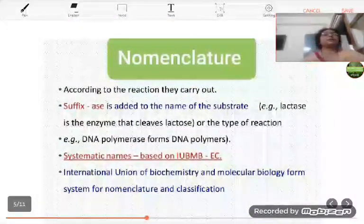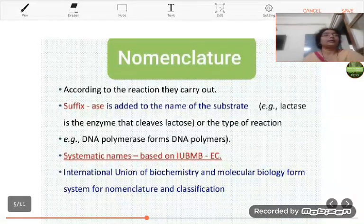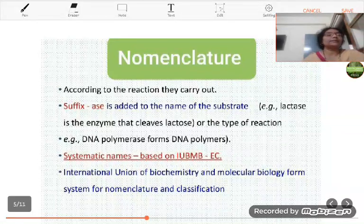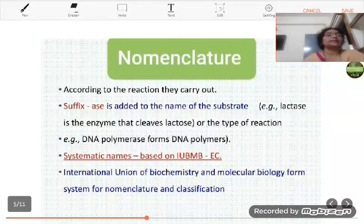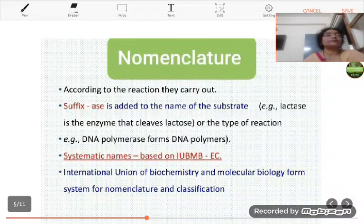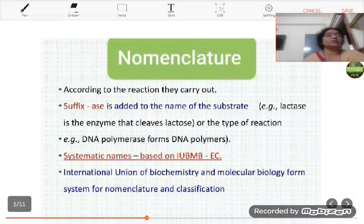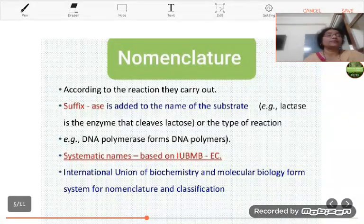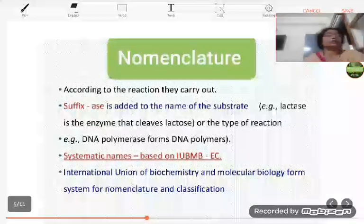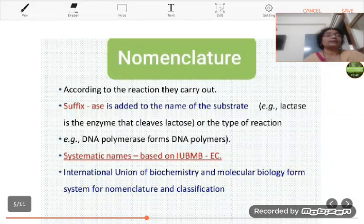Now the nomenclature of enzymes. The enzymes were named on the substrate they catalyzed without any definite guideline for nomenclature in the earlier but to make these names more systematic and more informative, the International Union of Biochemistry constituted an enzyme commission in the year 1964.